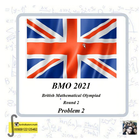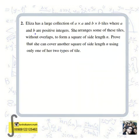BMO 2021, British Mathematical Olympiad Round Two, Problem Number Two. The problem is the following: Elisa has a large collection of a×a and b×b tiles, where a and b are positive integers.